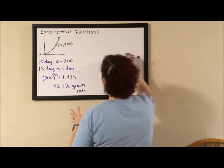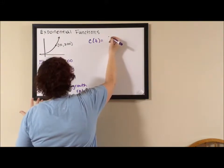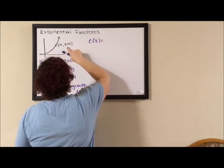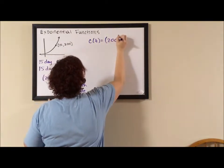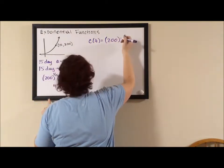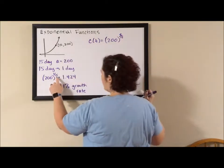So if we wrote the equation cockroaches over time, we start with one, we don't need to write it, and the growth factor is 200, as long as you take the number of days and divide it by 15, which is very much like what we have here.